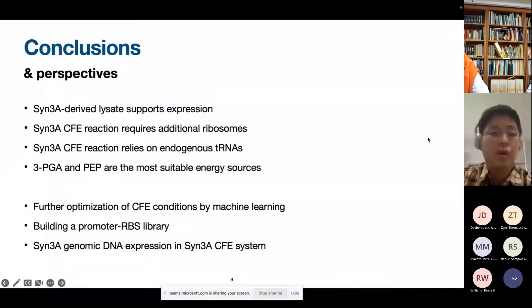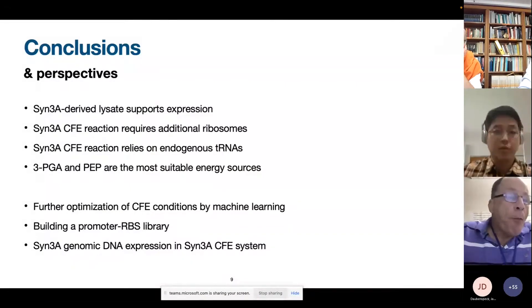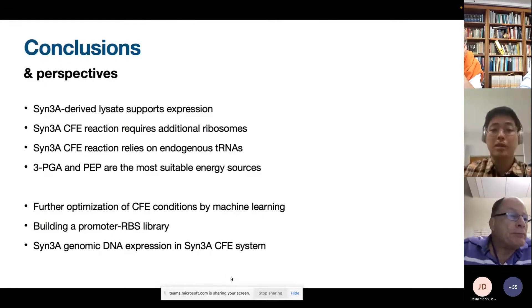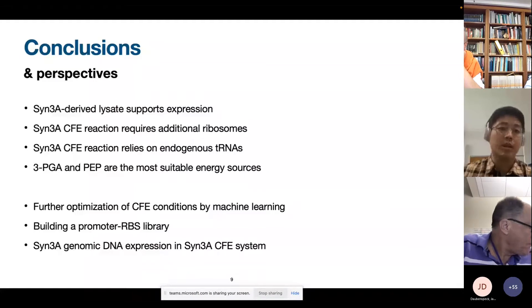For the perspectives, we are thinking of optimizing these CFE conditions using computational tools like machine learning. And we are also working on building a promoter RBS library. So we can have more options to make any cascade or to build new DNA templates for testing the metabolism of mycoplasma. And we are finally also isolating genomic DNA from the SYN3A and trying to express that into SYN3A CFE system as a model for building a protocell.